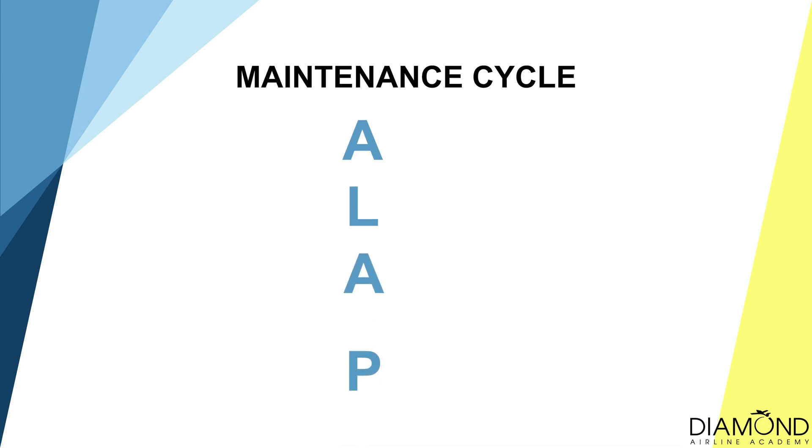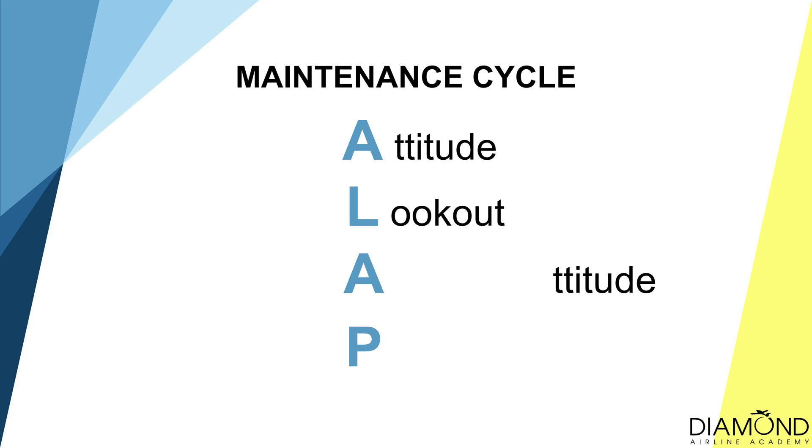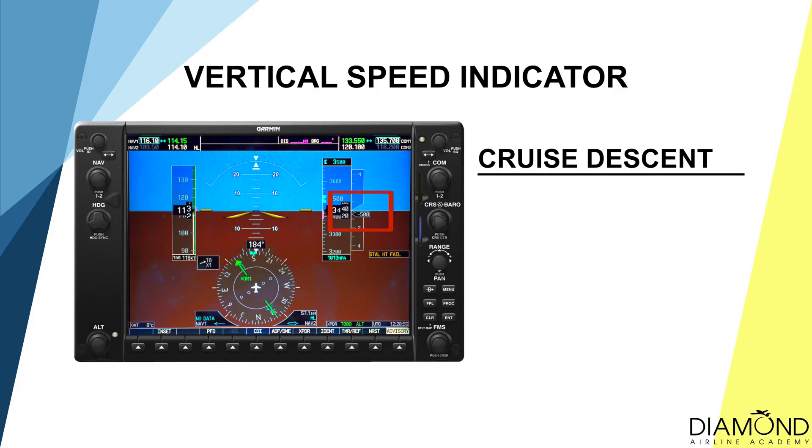Now we move on to the maintenance cycle, which is ALAP: Attitude, Lookout, Attitude, Performance. A — Attitude: depending on the type of descent, we use a different attitude. L — Lookout: we look out for other traffic or obstacles during the descent. Back to A — Attitude: another opportunity to check our attitude. P — Performance: we look at our instruments. First, check our heading — we want to maintain the same heading as before. Another key indication is the vertical speed indicator; especially during cruise descent, we want to maintain 500 feet per minute rate of descent.